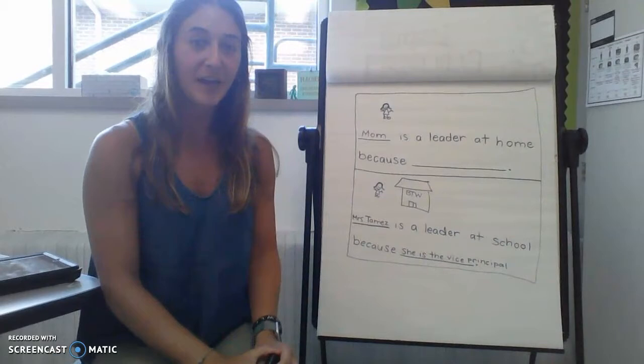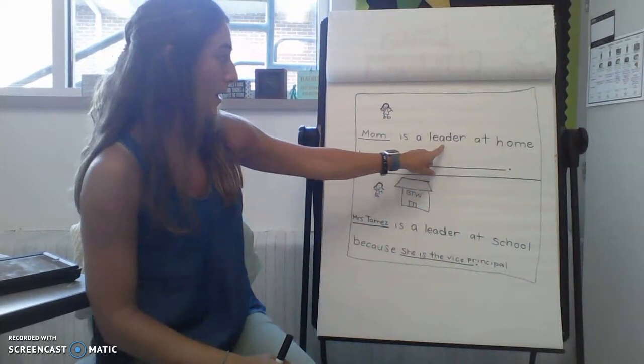So you'll use your journal. You will make two different drawings about who is a leader at your home and who is a leader at your school. Then you'll use your iPad, you'll take a picture of it, and you will upload it to Google Classroom. Alright guys, I'll see you later. Bye!